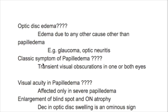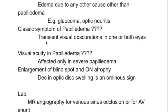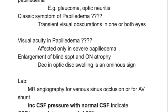What is the classic symptom of papilledema? Transient visual obscurations in one or both eyes. Visual acuity is affected only in severe papilledema, if there is enlargement of the blind spot and optic nerve atrophy. A decrease in optic disc swelling is then an ominous sign.